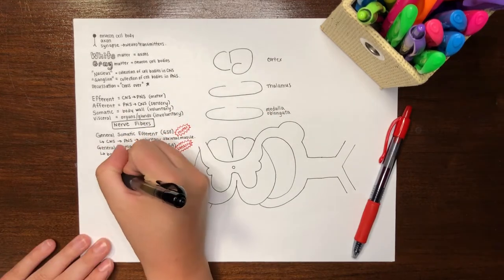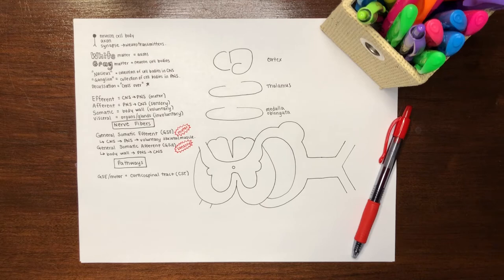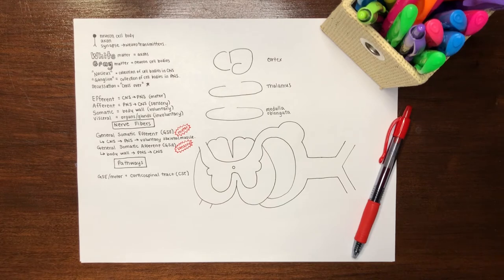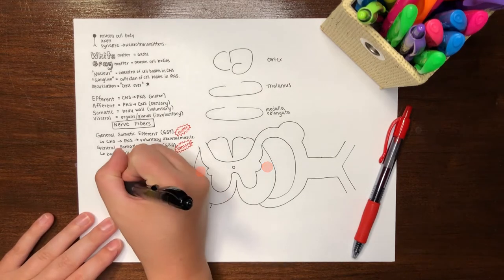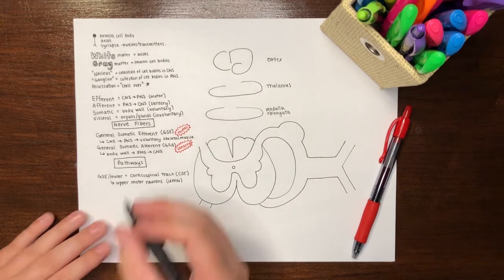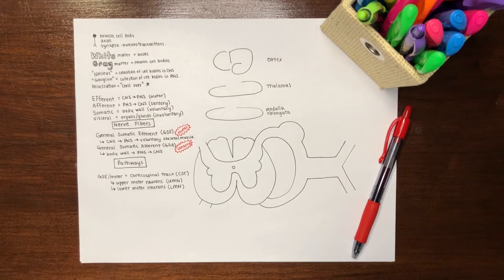We will start by drawing out our main GSE, voluntary motor pathway. These neurons travel from the primary motor cortex, down the spinal cord, towards skeletal muscle fibers. This pathway is called the corticospinal tract, abbreviated CST, which describes itself in its name: cortex in the brain to the spine. In the spinal cord, this tract travels down from the brain to the lateral white matter at approximately this location. There are two notable classifications of neurons in this pathway: upper motor neurons, abbreviated UMN, and lower motor neurons, abbreviated LMN.